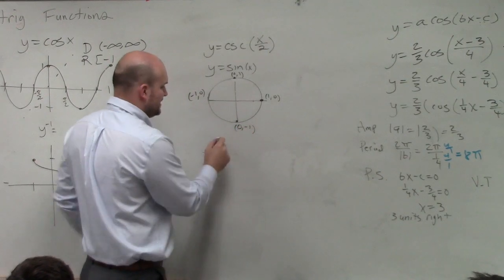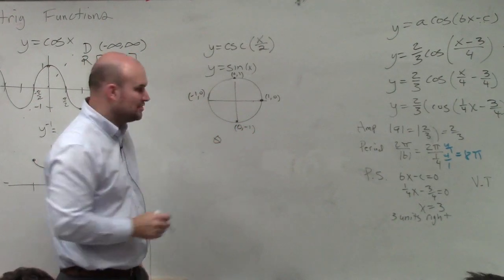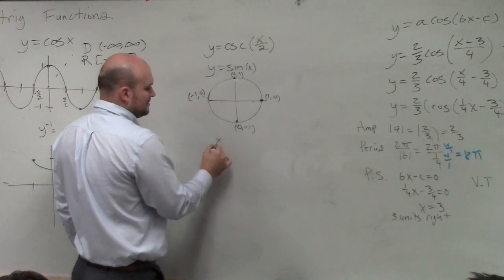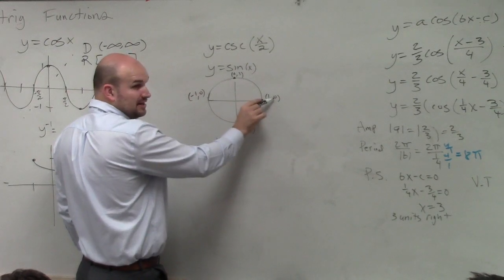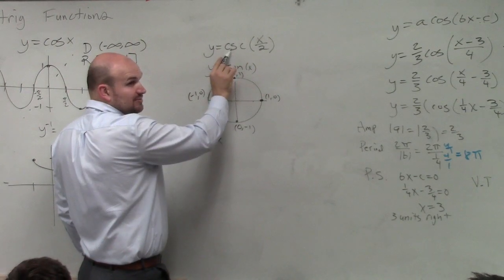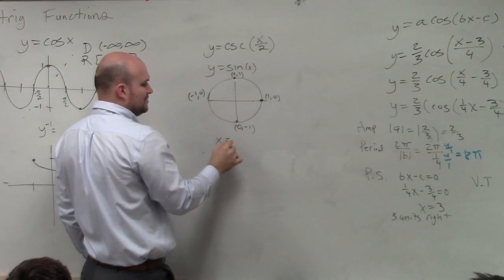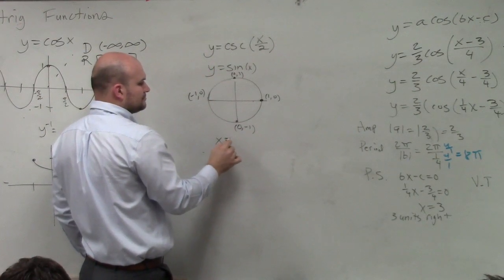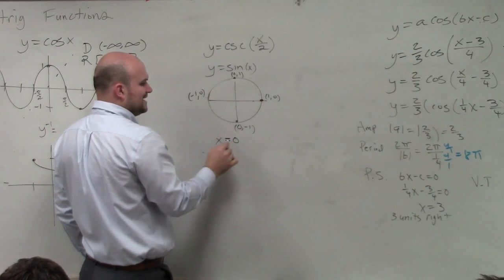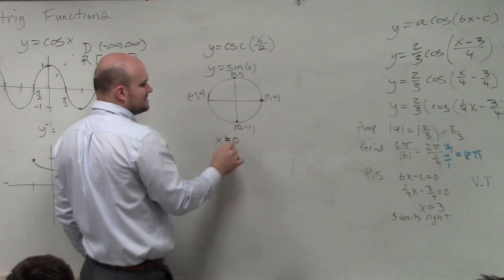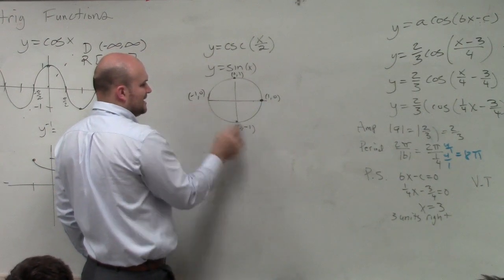So what angles do we have asymptotes at? Well, is y 0 here? So therefore, cosecant would be 0, right? OK, so we could say x cannot equal, x would be at 0, and then x cannot equal pi.